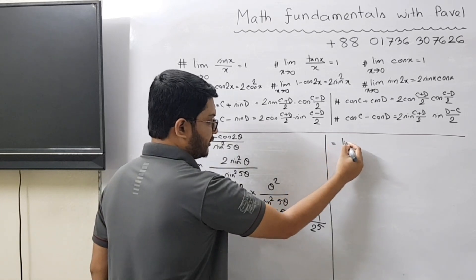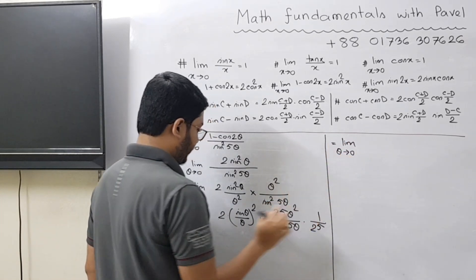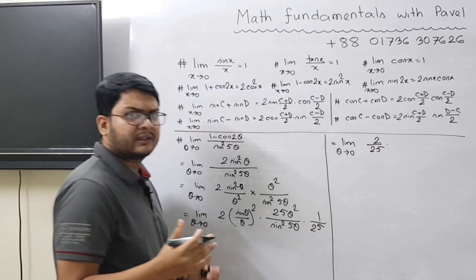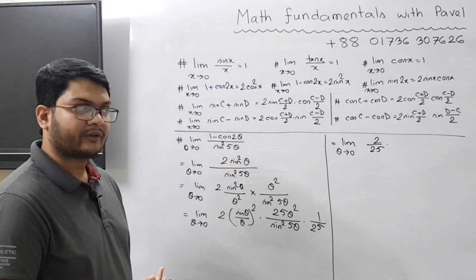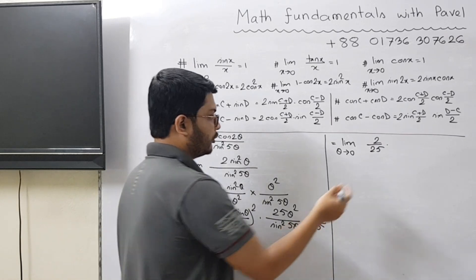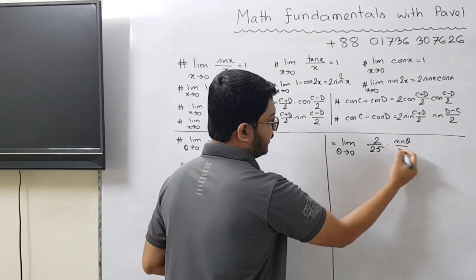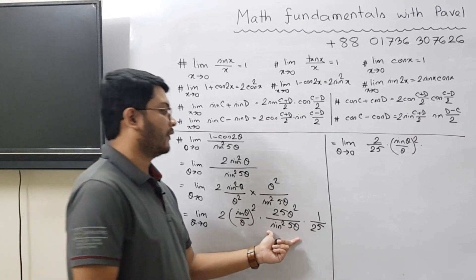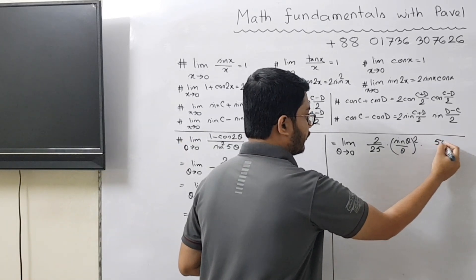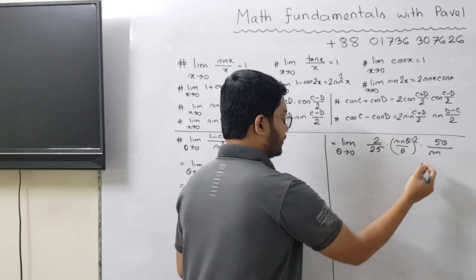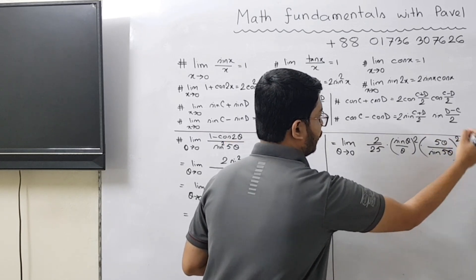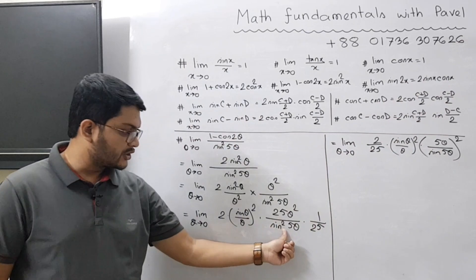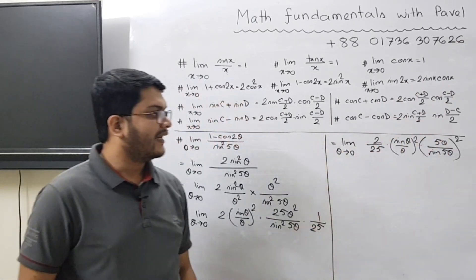So in the next line: limit theta tends to 0, it becomes 2 divided by 25 — we bring all constants to the front. Then we have sin theta by theta whole square, which we leave as is. The remaining part converts to 5 theta divided by sin 5 theta, whole square, because 25 theta square is 5 theta whole square and sin square 5 theta is sin 5 theta whole square.